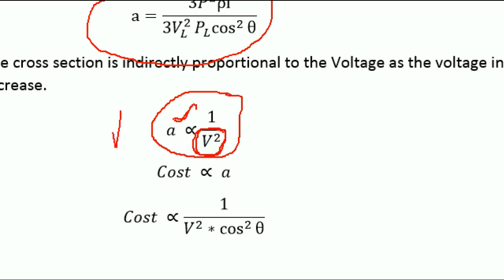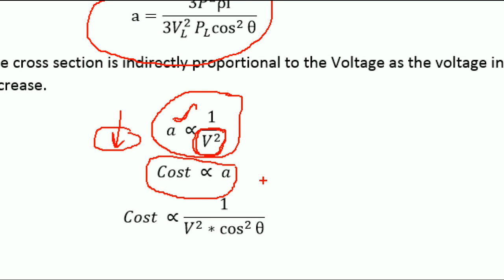The cross-section is inversely proportional — 1 over voltage squared. So when we raise the voltage, we will reduce the size of the conductor. How do we find the cost? If we find the conductor size, we find the cost. If we find the cable size, we find the cost. Ultimately, if we reduce the conductor size, we reduce the cost.